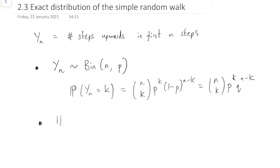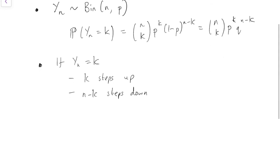Second important fact. If Yn equals k, what does that mean? It means we've taken k steps up, and so all the other steps we've taken must have been steps down, so we've taken n minus k steps down. So where have we ended up? We've ended up at Xn, and it's the k steps up, counting as plus 1, and the n minus k steps down, counting as minus 1.